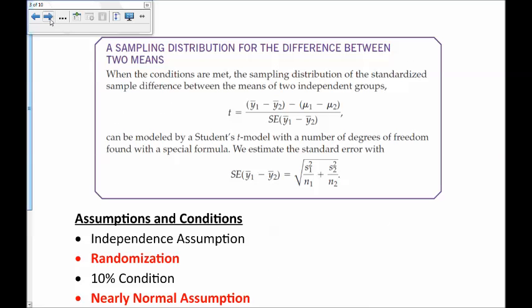Here is the sampling distribution for the difference between means. Just like always, this should look something like z equals x minus mu over sigma, but now you're dealing with two populations. So this x is y sub 1 bar minus y sub 2 bar, and the mu is going to be mu sub 1 minus mu sub 2, over the standard error, which is that thing we just talked about.